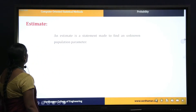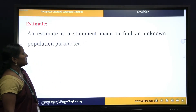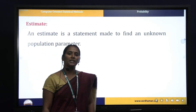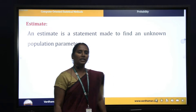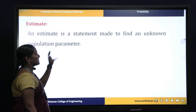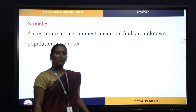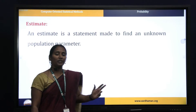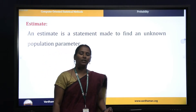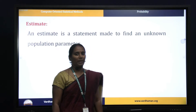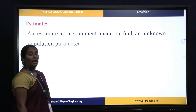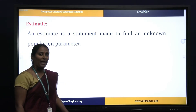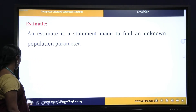Now let us see the concept of estimate. An estimate is a statement made to find an unknown population parameter. Parameter means the population observation. For example, the statement 'the movie is running successfully after 100 days' includes a number — that is what we call it as a parameter. So an estimate is a statement made to find an unknown population parameter.